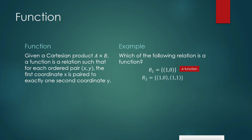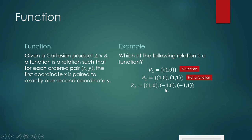Is the first coordinate paired with exactly one second coordinate? Yes, so this one is an example of a function. How about this one — where one is paired to two y-coordinates? So this is not a function. How about another: look at negative one, which is paired to zero and at the same time paired to one. This does not fit the definition of a function, so this one is not a function.